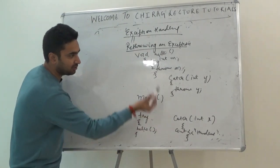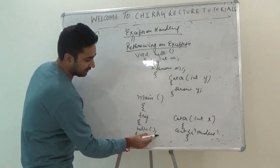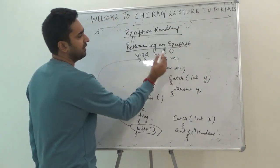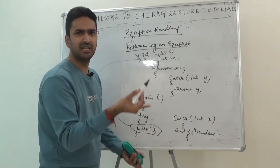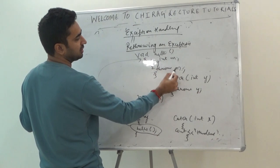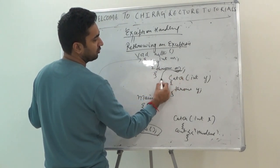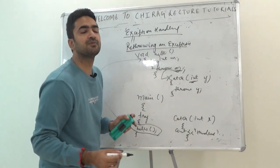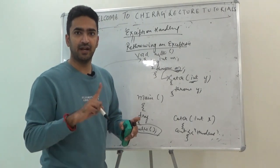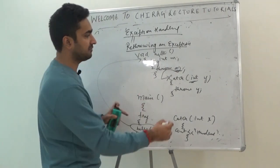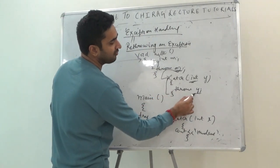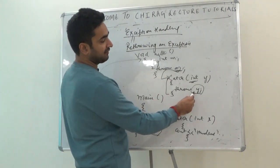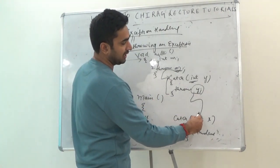Let's trace the execution. In main's try block, I call hello. Inside hello, I declared integer m and wrote throw m. The moment throw is executed, it goes to the catch block, checks that m's data type int matches the catch parameter int y — they match, so the catch block is entered. But unfortunately that catch block also throws an exception.